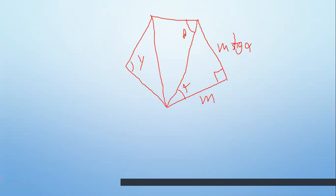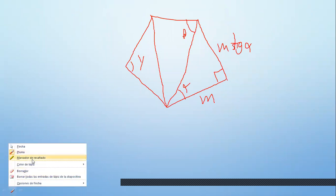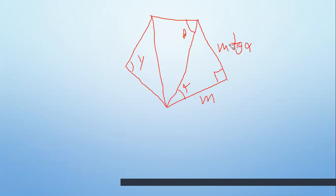Si no tuvieras 90, ¿qué harías? Ya no serían triángulos rectángulos, sino oblicuángulos. En trigonometría hay otras técnicas: en vez de seno y coseno de un ángulo recto, usas seno de 60, seno de 50, seno de 70 para cada lado, siguiendo la misma lógica de razones trigonométricas.